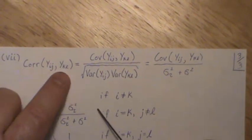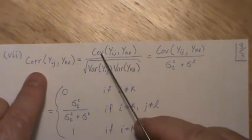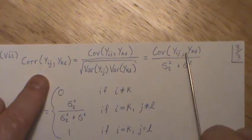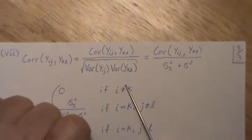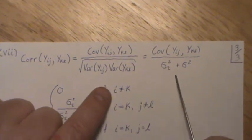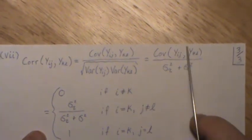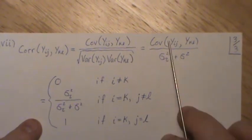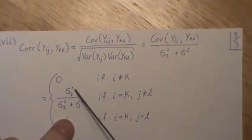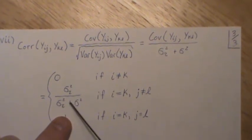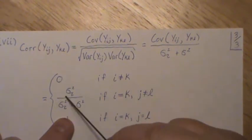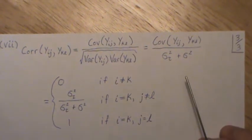Now let's look at the correlation between any two observations. The correlation is the covariance divided by the product of the standard deviations. The variance of Y_IJ is sigma tau squared + sigma squared. The three cases give correlations of zero (different treatment arms), one (same observation), and — for same treatment arm but different observations — sigma tau squared divided by (sigma tau squared + sigma squared). This last quantity is called the ICC, the intraclass correlation coefficient.